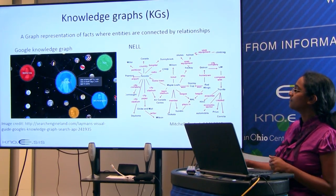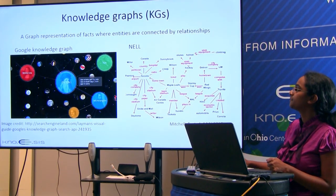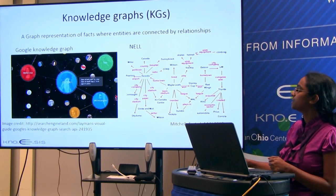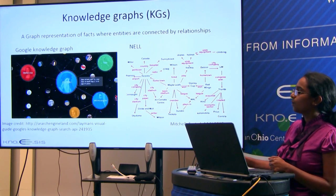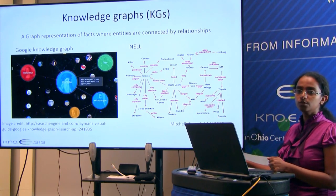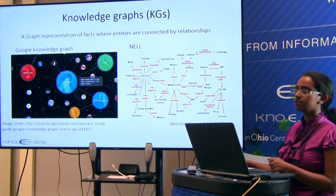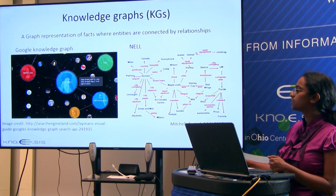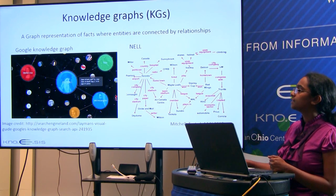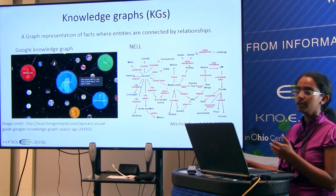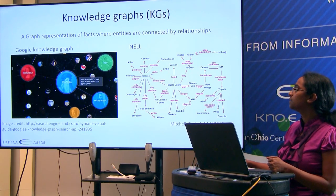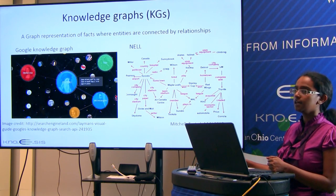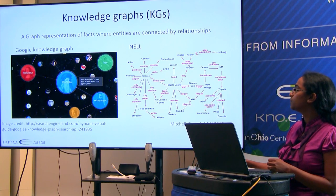We can define a knowledge graph as a graph of facts where entities are connected by relationships. We've all heard about the Google Knowledge Graph — Google uses it to improve entity search. While Google Knowledge Graph is mainly developed by humans, there have been efforts in automatically constructing these knowledge bases within the AI and semantics community.